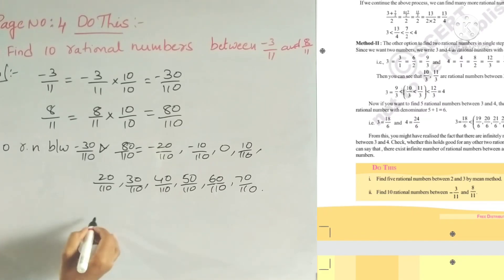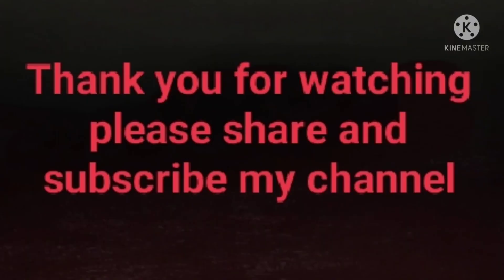In this method, we can also write minus 20 by 110, minus 19 by 110, and so on till minus 10 by 110. These problems show that there are infinite rational numbers between any two rational numbers, so we can calculate them easily.